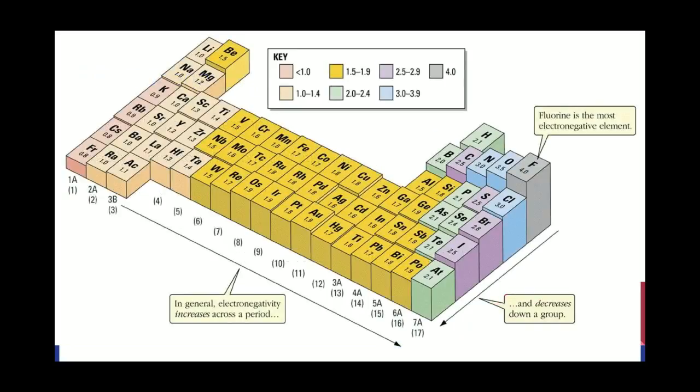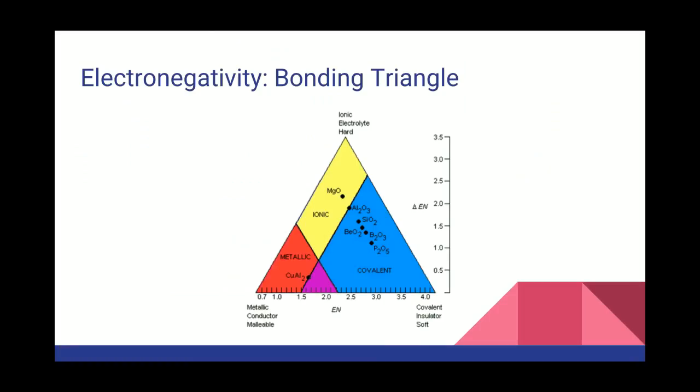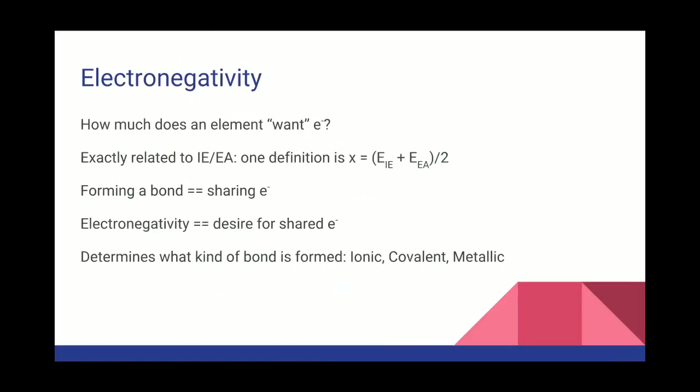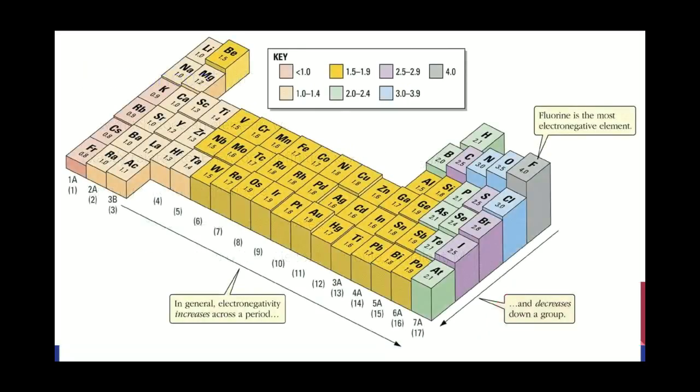So this right here is a chart showing, nice and three-dimensionally, electronegativity. And these numbers are calculated using this formula here that I showed you. So here in the upper right, of course, fluorine is the most electronegative element with an electronegativity of four, it's kind of ridiculous.